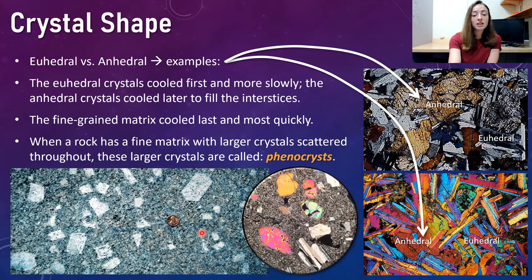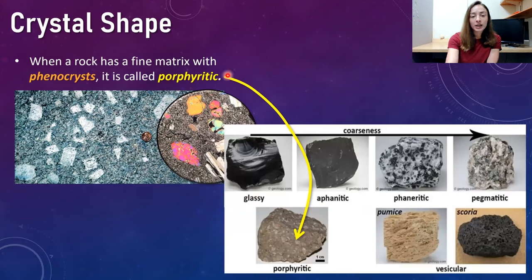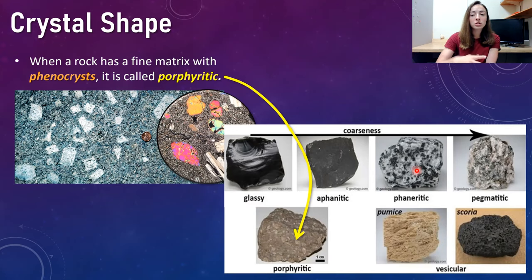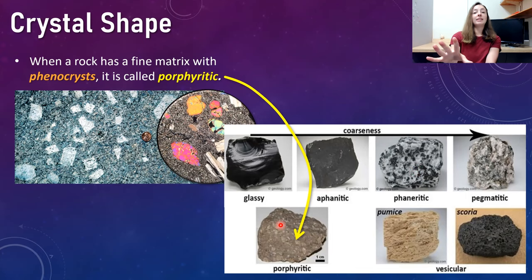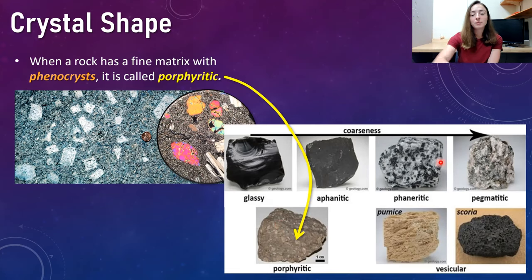We can see examples of this in these pictures here — a rock picture with a penny for scale, and a thin-section picture. We can see there's a fine-grain matrix material, and there are coarser grains called phenocrysts — larger crystals scattered throughout a fine-grain matrix. This texture is called porphyritic. When you have a fine-grain matrix with coarser grains or phenocrysts scattered throughout, it's called porphyritic. Don't get this confused with phaneritic, which is coarse-grained throughout with no fine-grain matrix — porphyritic has a fine-grain matrix and really stand-out phenocrysts.